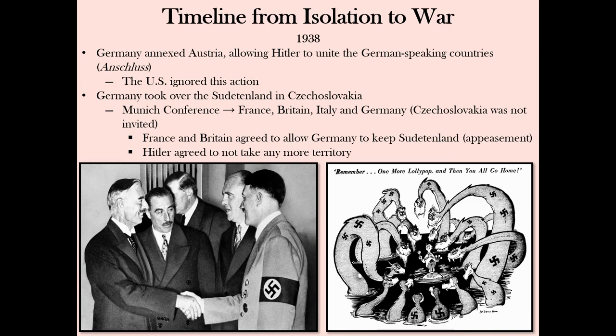Britain and France agreed to meet with Hitler in Munich. The Four Power Pact signed between Great Britain, France, Italy, and Germany allowed Germany to keep the Sudetenland. In return, Hitler signed a peace treaty with Great Britain and promised he would not expand further. In response to this appeasement, Winston Churchill said: 'You were given the choice between war and dishonor. You chose dishonor and you shall have war.' Chamberlain returned from Munich famously proclaiming, 'I believe it is peace for our time.' He was wrong. Churchill was right.